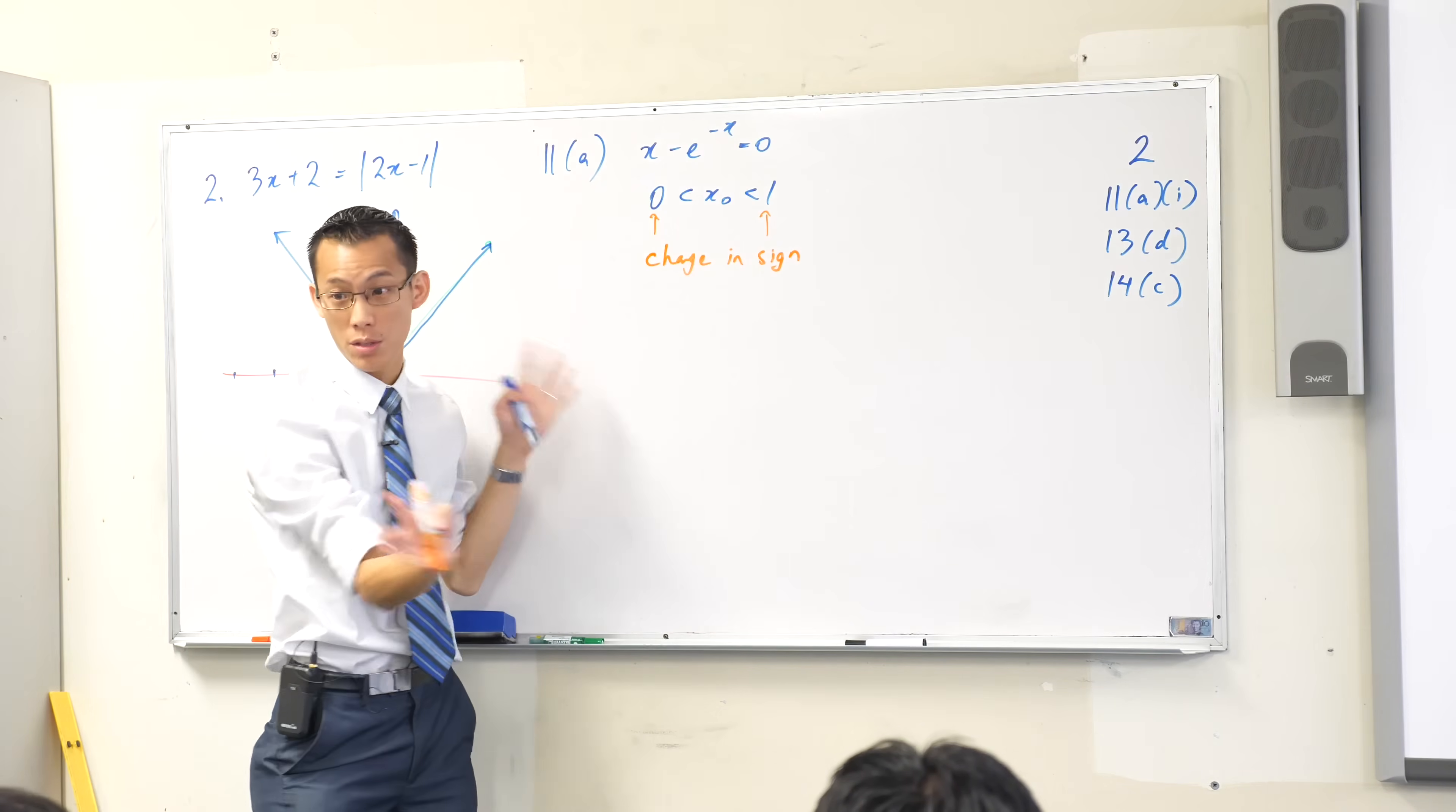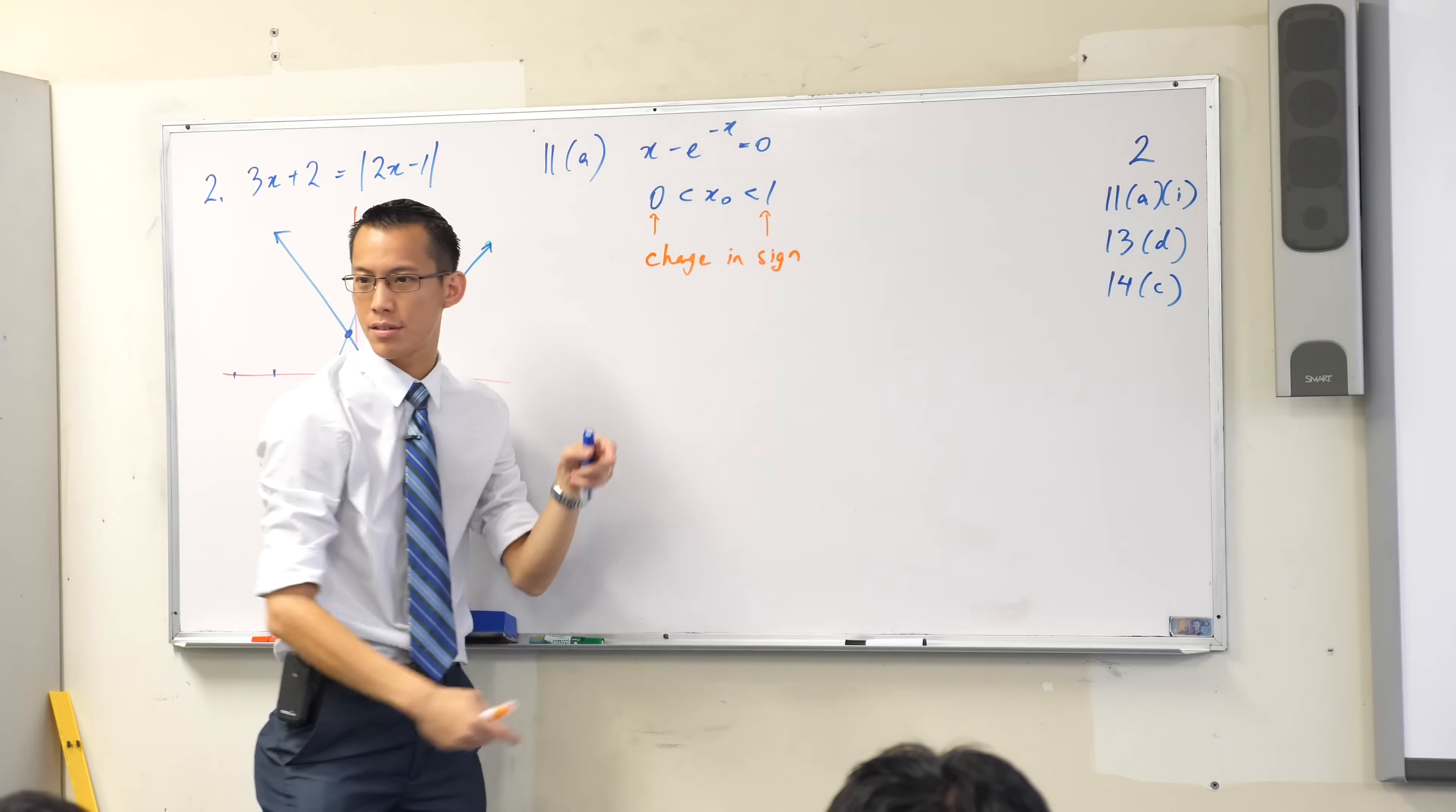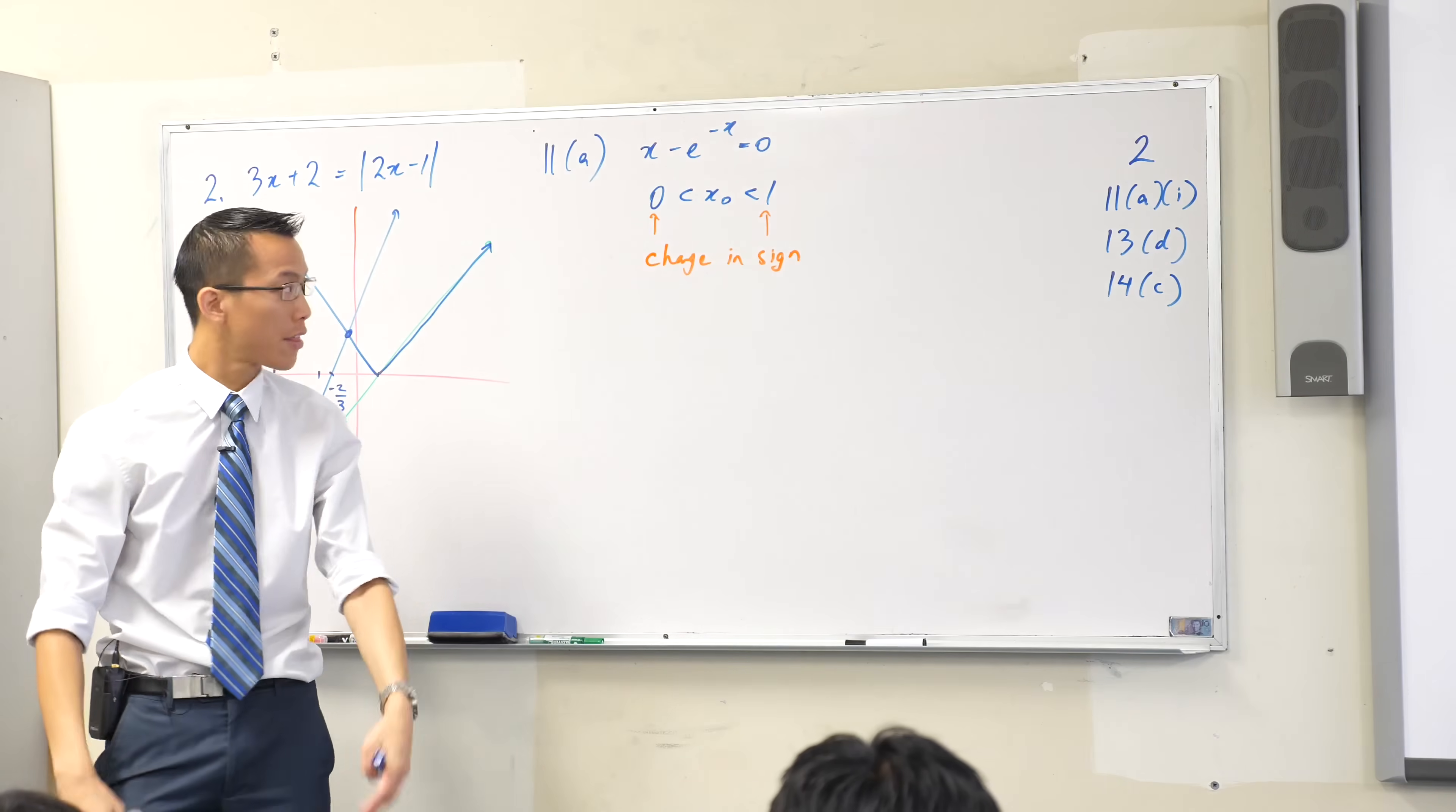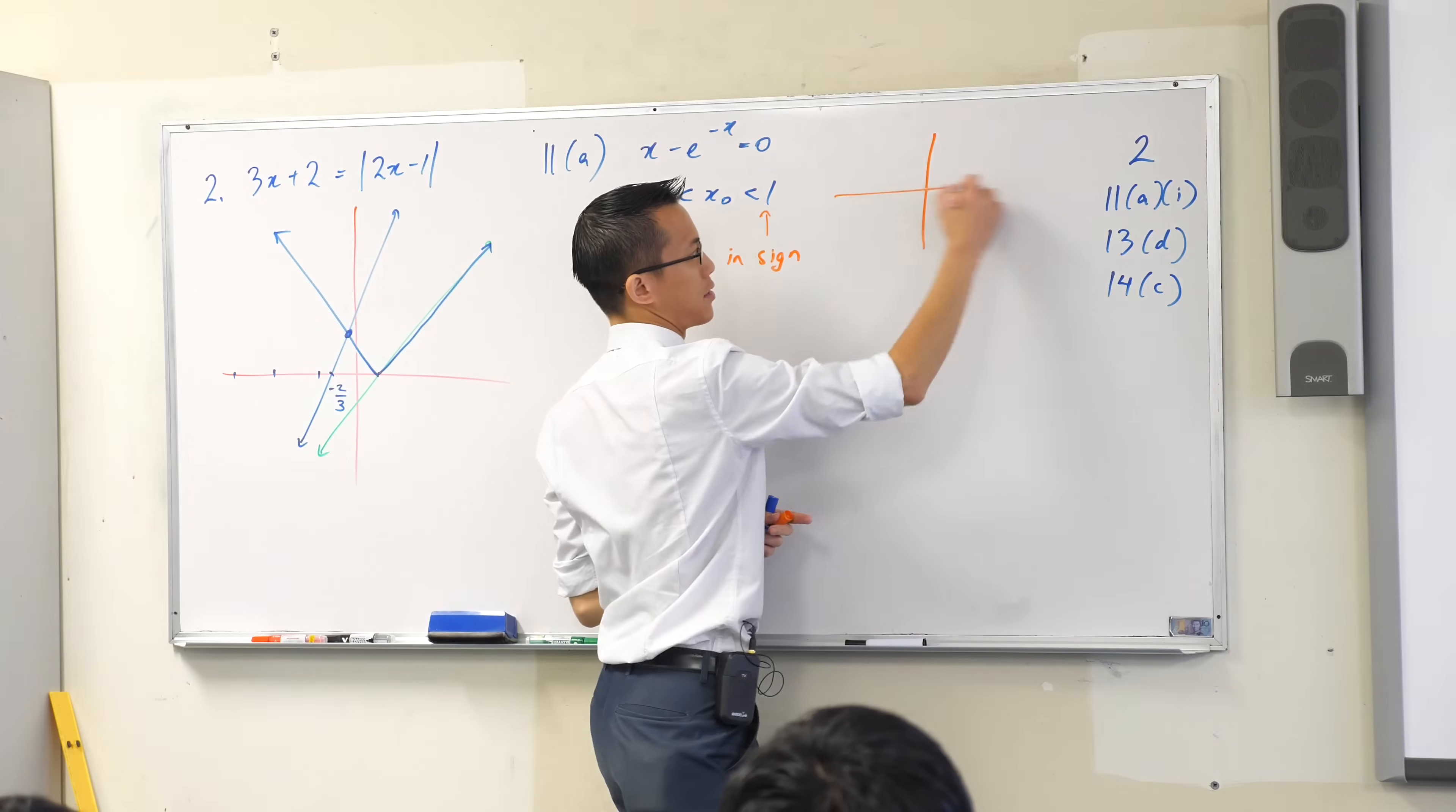So all you had to do, and most of you were fine with this, is just evaluate this at each of these values, right? And then you've got a negative for one, you've got a positive for other. It's a continuous function.